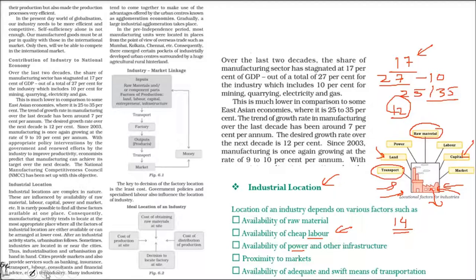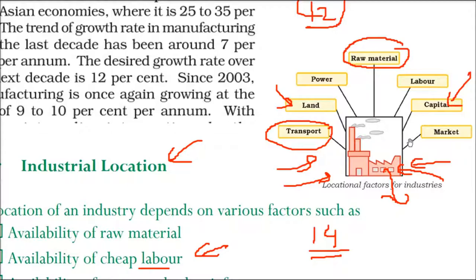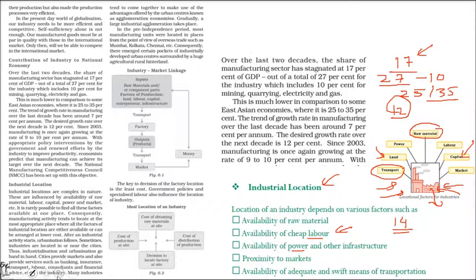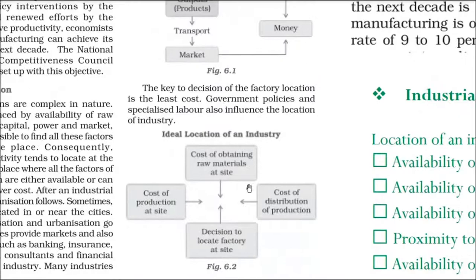To summarize, we need raw material, power, land, transport, labor, capital, and market for the industrial location to be good. The ideal location of an industry will always minimize the cost of obtaining raw materials at the site. The cost of distribution of production should be optimal, and the cost of production at the site should be minimized. These are the factors which affect industrial location.